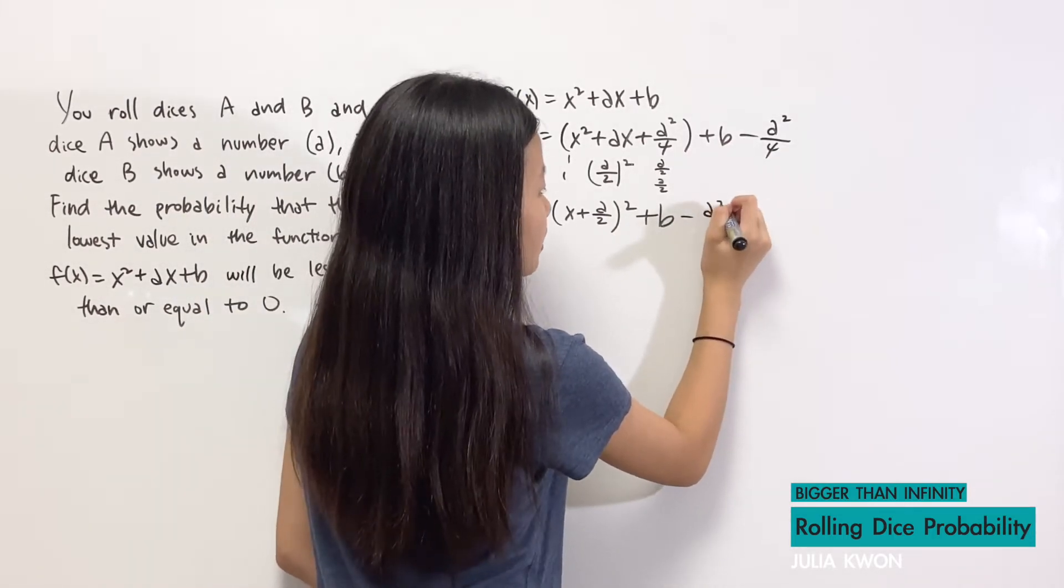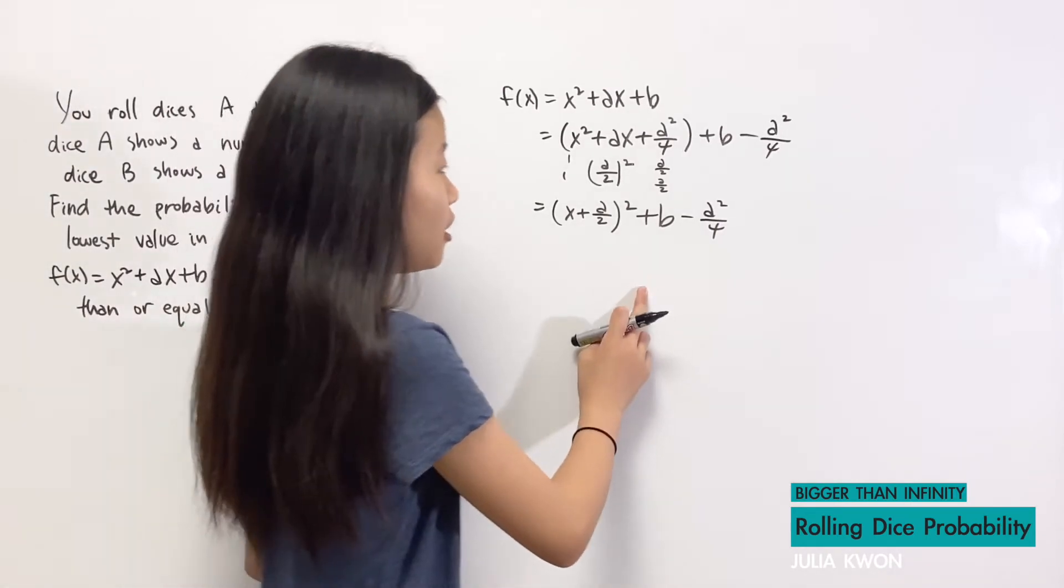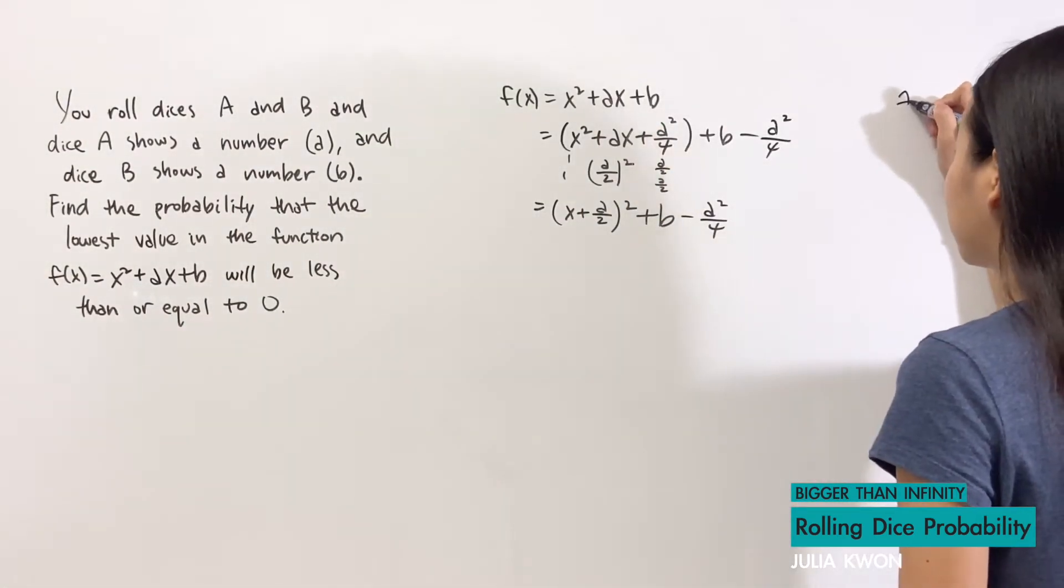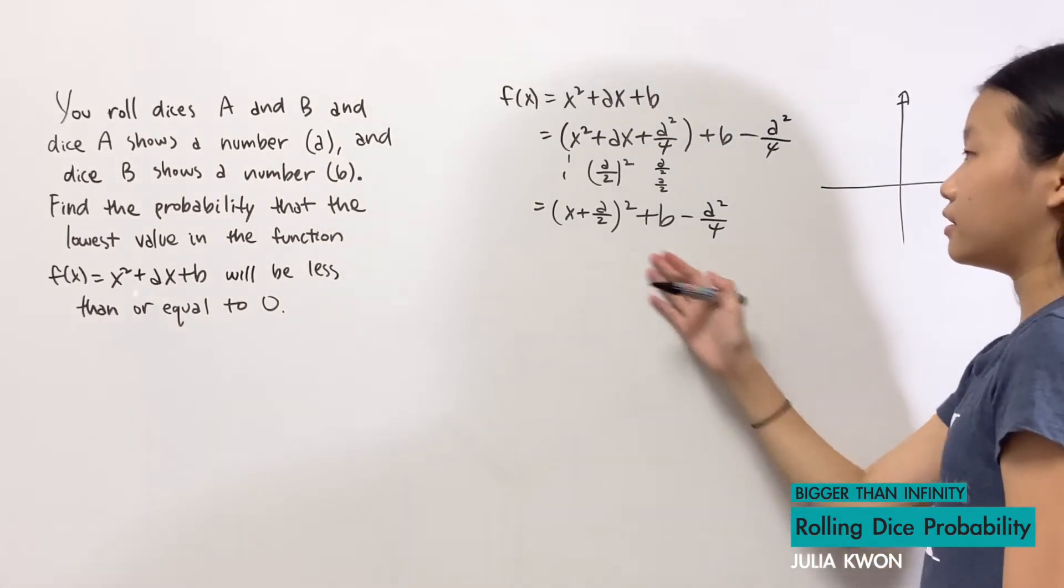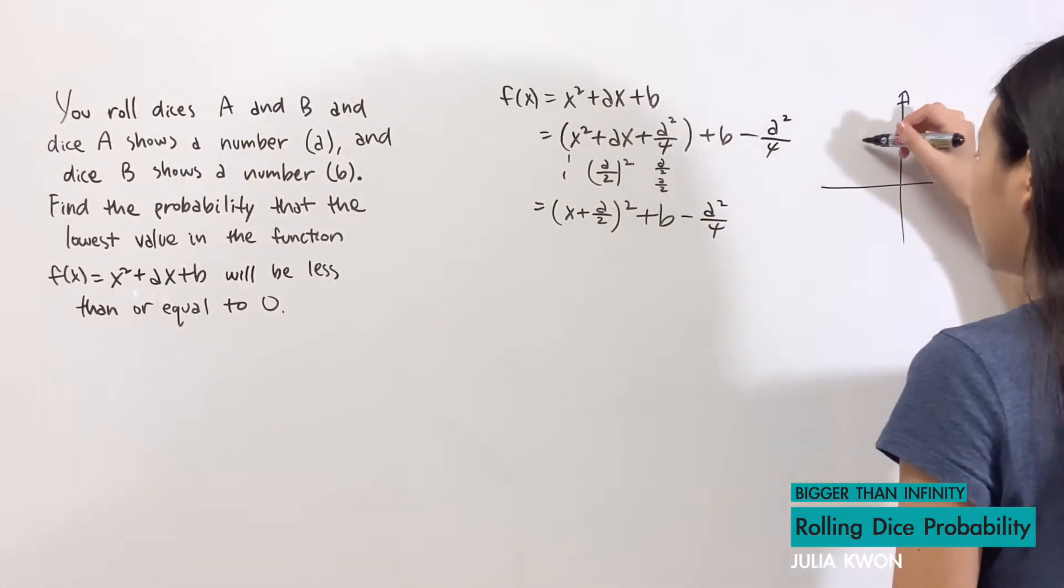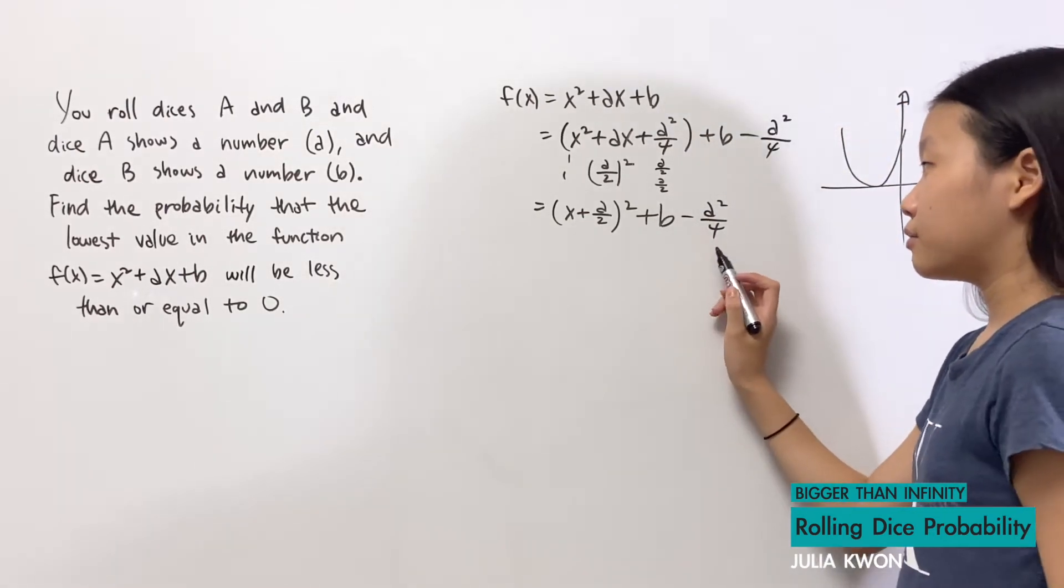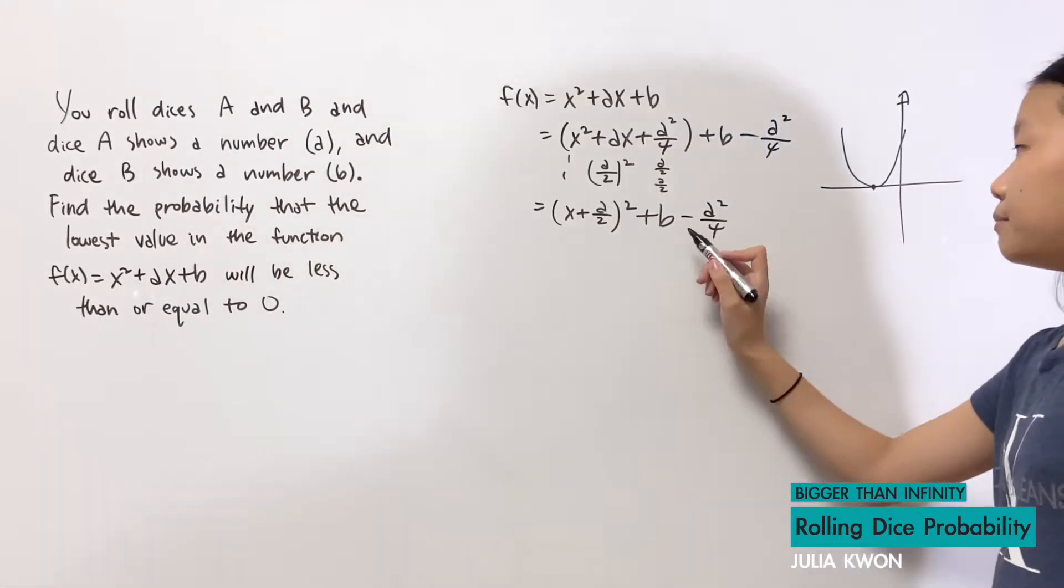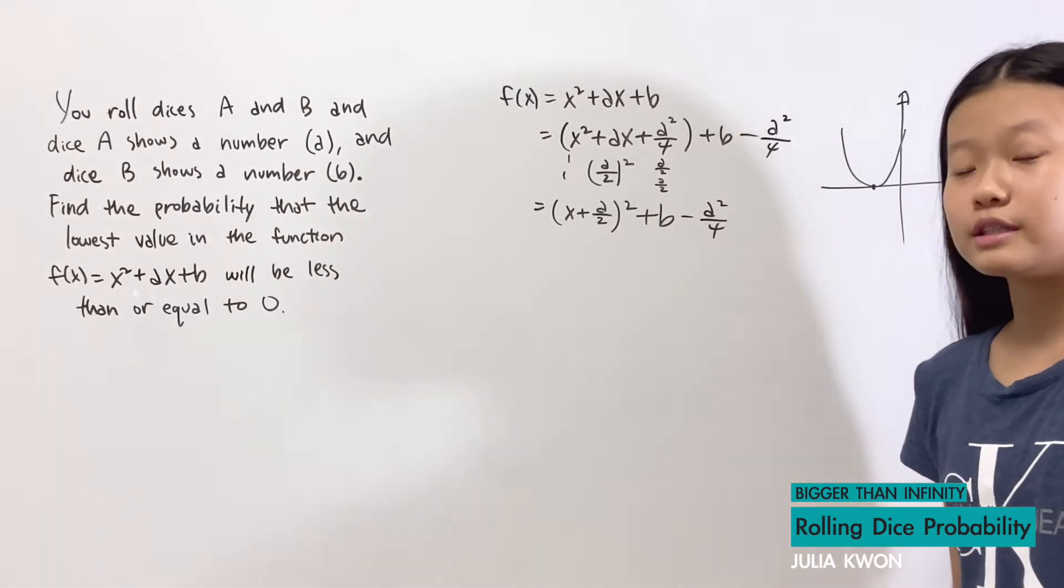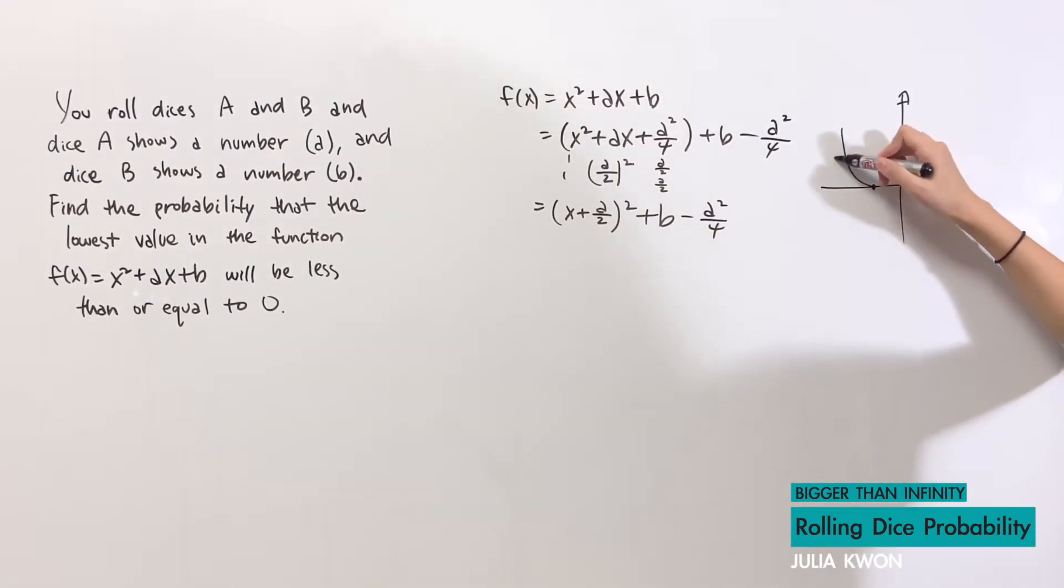And so if I draw out this graph, then this function will basically just look like this if b - a²/4 equals 0. But if b - a²/4 is less than 0, then this function could be more down.